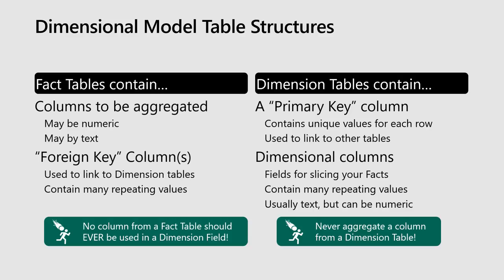These are all rules that have potential permutations. The key thing to remember is that if we have a dimensional table, we never want to drag one of those fields into the bottom right-hand corner of a pivot. As soon as we do, it becomes a fact table, and those extra fields should not be on that table at all.